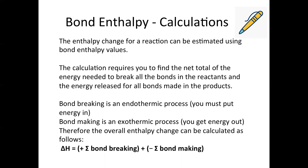Essentially, the calculation works by gathering a net total of the energy put in to break all the bonds versus the energy you get out when making all the bonds. Things to remember: bond breaking is an endothermic process, so energy needs to be put in to break bonds, whereas bond making is exothermic, so you'll get energy back out. If you think of it like a bank balance — you can pay money in, you can take money out — your final balance is the net total of money put in versus money taken out, which is essentially how this calculation works. We add up the bond enthalpies for breaking every single bond in the reactants, then add up all the energies released for making every single bond in the products, and take the net total.